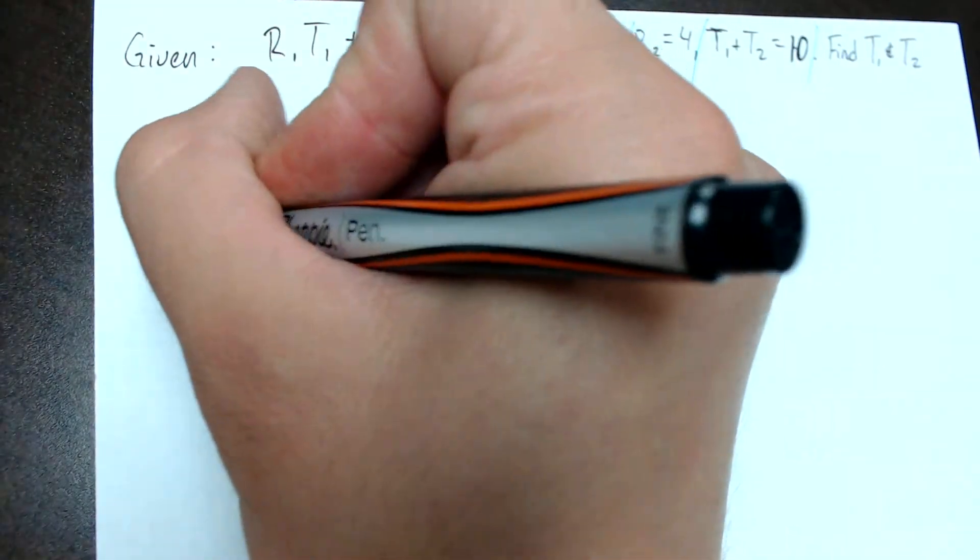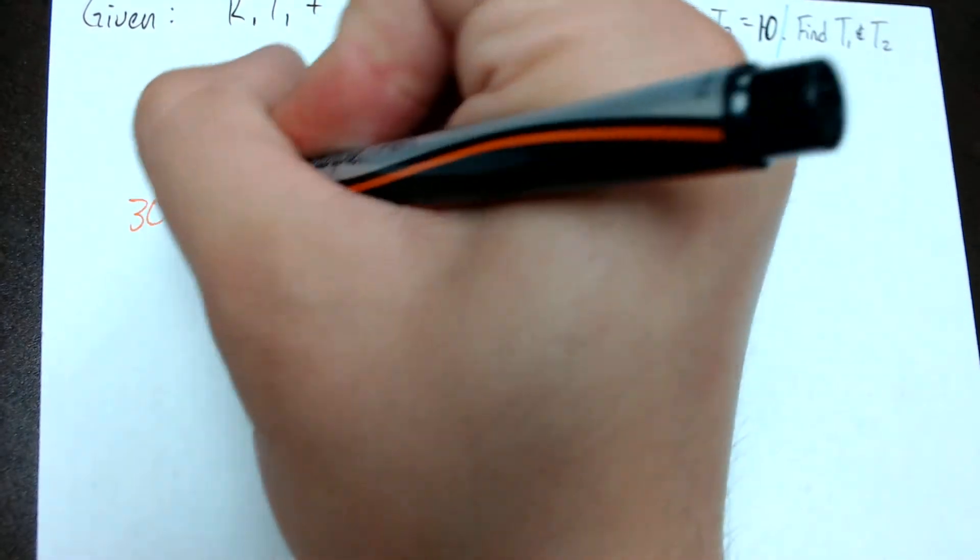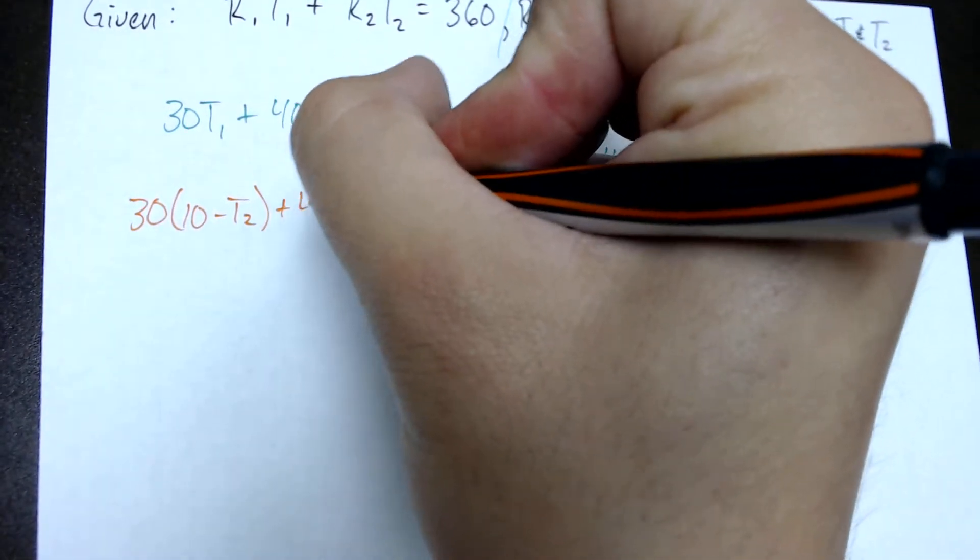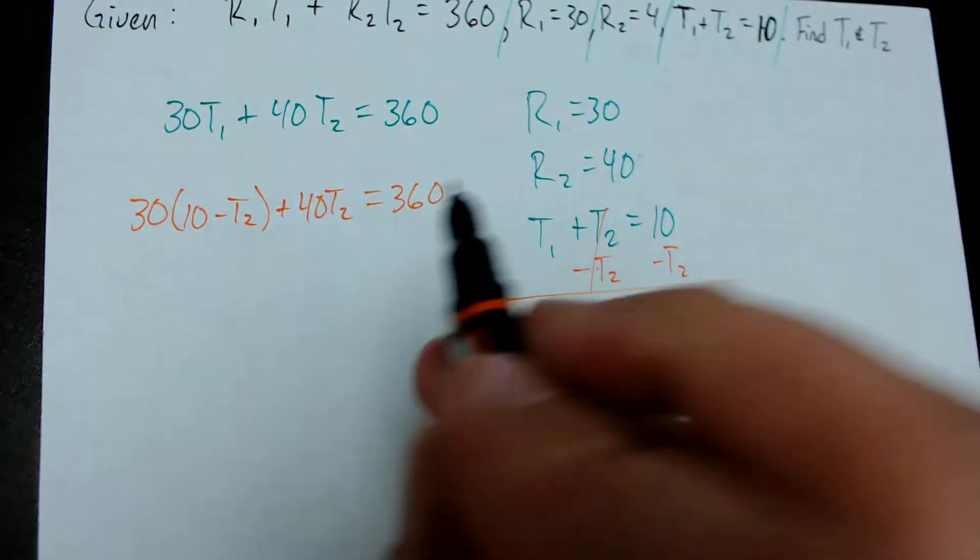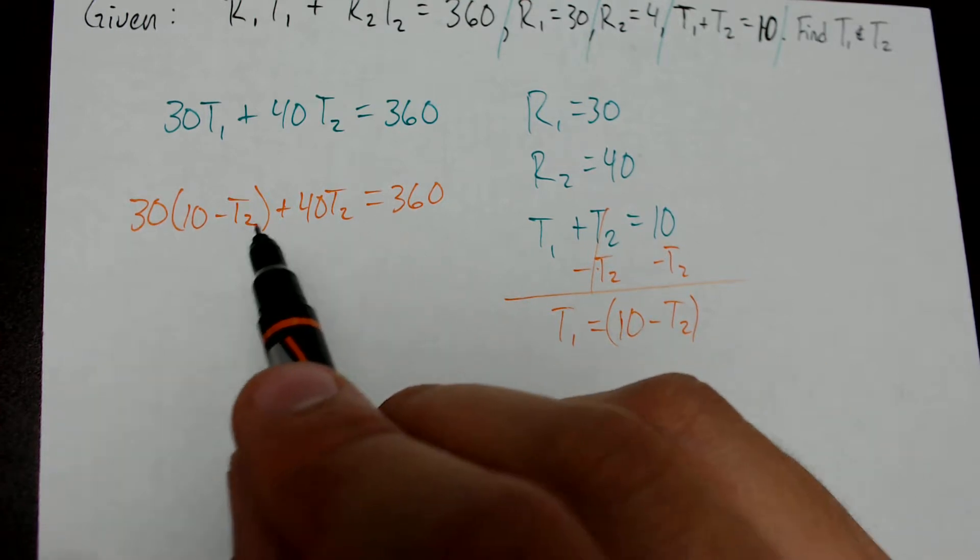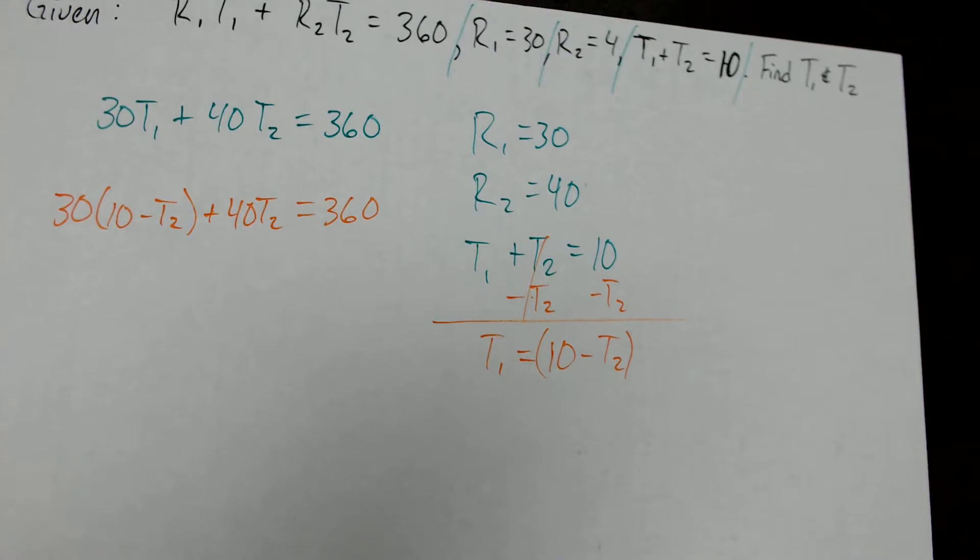This becomes 30 times 10 minus T2 plus 40 times T2 equals 360. Now that I've substituted, if I use distributive property and rewrite this equation, I can then solve it. We'll go ahead and distribute.